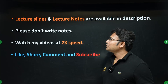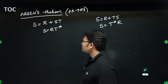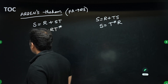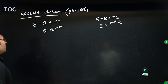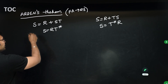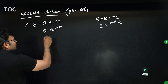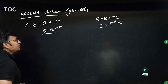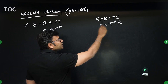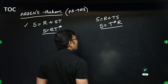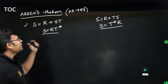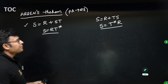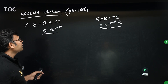Arden's theorem is used to convert finite automata to a regular expression. It is based on two rules: when S = R + ST, then S = R*T; and when S = R + TS, then S = T*R. Don't ask for the meaning of S, R, and T — there is no meaning. They can be anything: states, regular expressions, or a combination.